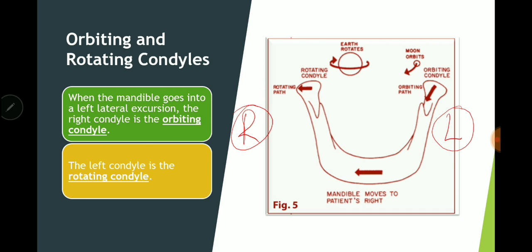Keep in mind that as shown in the picture, the condyle on the side opposite to where the mandible moves is called the orbiting condyle. During lateral mandibular movements, the orbiting condyle moves inward.